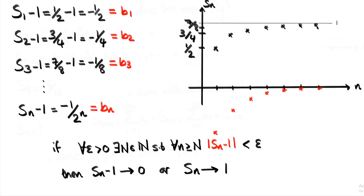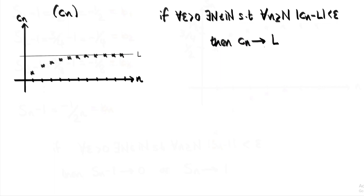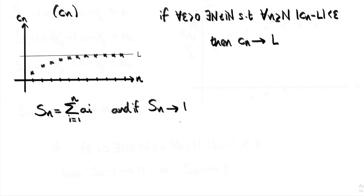If we want to think about a more general sequence cₙ which converges to a limit that isn't one — let's call it capital L — then we apply the same condition, except instead of Sₙ minus one we write cₙ minus L. So we're converting the sequence c, which converges to L, into cₙ minus L, which converges to zero. Getting back to our sequence of partial sums S: Sₙ stands for the sum of aᵢ where i goes from one up to n. And when we say Sₙ converges to one, we mean that this infinite series, as n gets larger and larger approaching infinity, becomes closer and closer to one. So in the limit as n goes to infinity, the sum of aᵢ from i equals one to infinity is equal to one. This is precisely what we mean when we say an infinite series equals some value — the sequence of partial sums converges to that value.